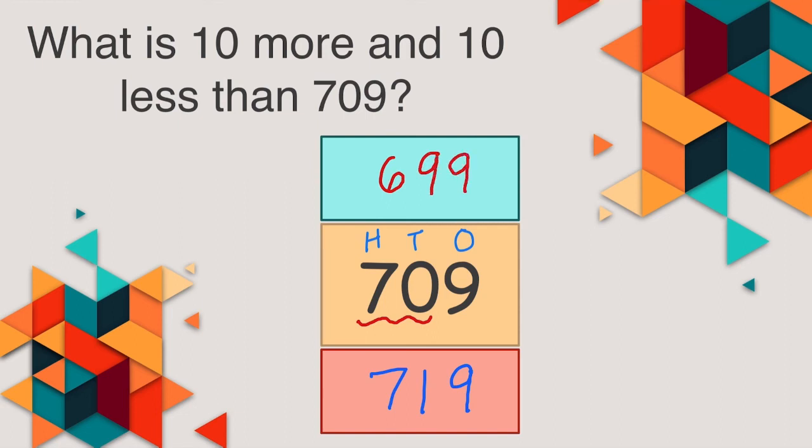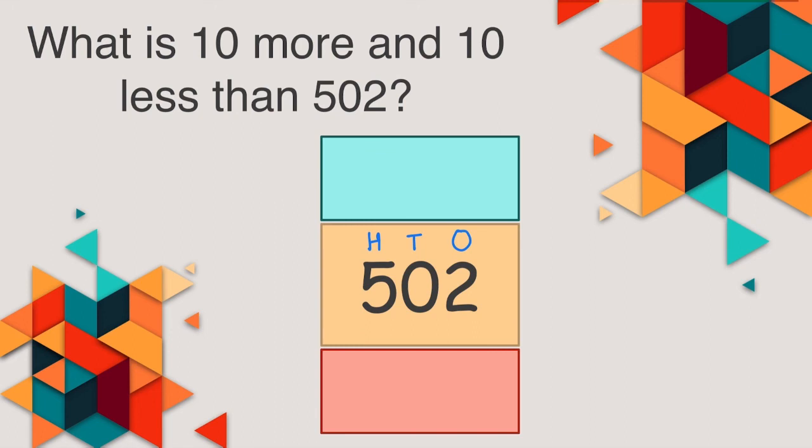The ones digit is remaining the same. We are only changing the tens. But because the ten had a 0 in it, we looked at 2 digits together. Last one. I am sure by now, you all have understood it very well.